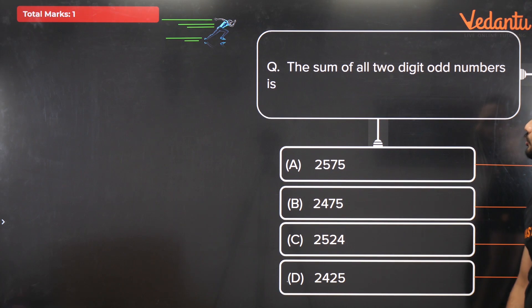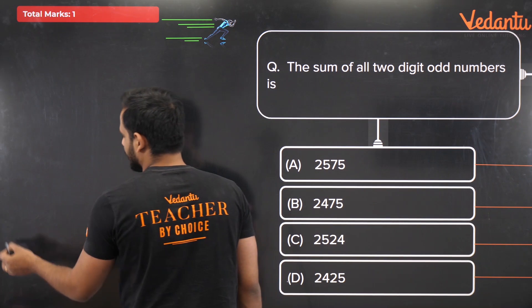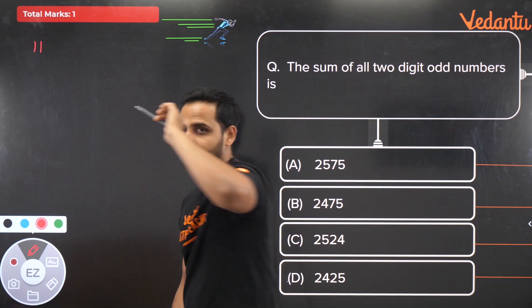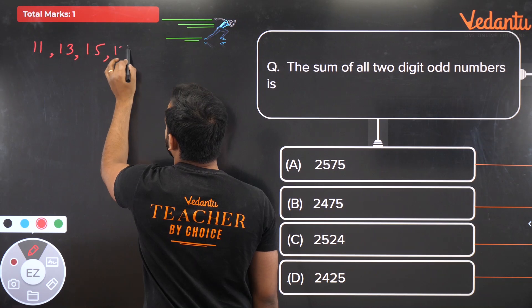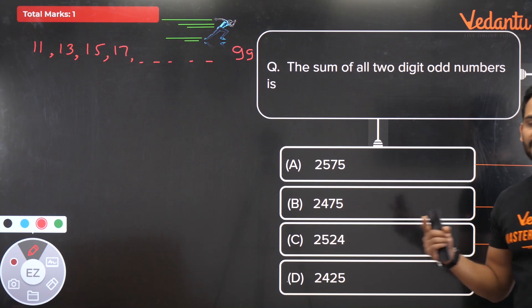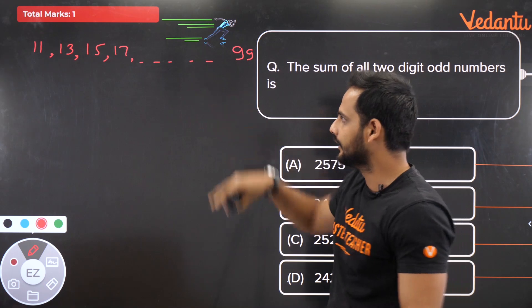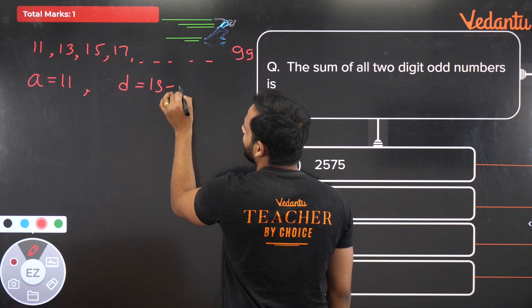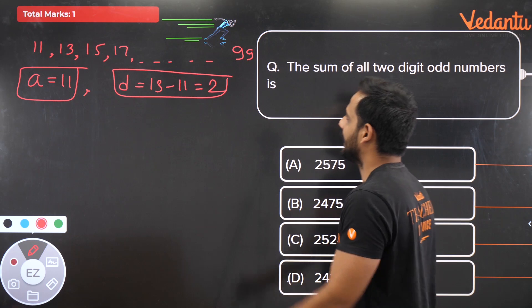Question 2: Find the sum of all two-digit odd numbers. The two-digit odd numbers go from 11, 13, 15... up to 99. First term a = 11, common difference d = 13 − 11 = 2. We need to find how many terms there are.